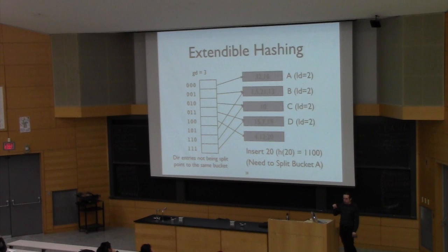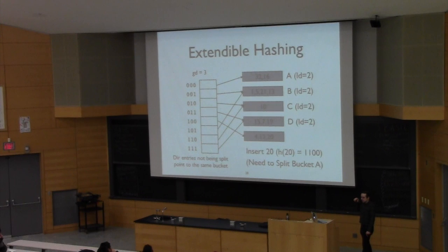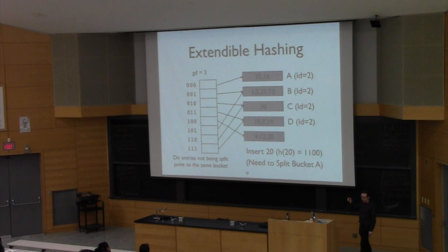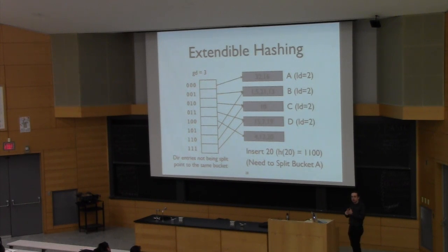The basic lookup process: if I want to look up a value that hashes to 0,0,0, I go to whatever page 0,0,0 points to. If I want to look up the value 5, I would go to the directory and find 0,0,1 because that's what five hashes to, then follow that pointer — which would say go to page B — and I scan through all the records in page B and find the one I'm looking for, namely five.